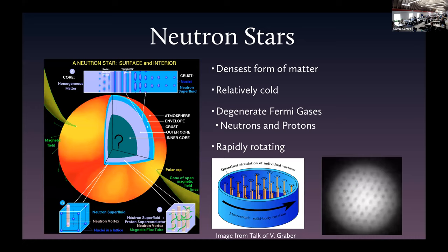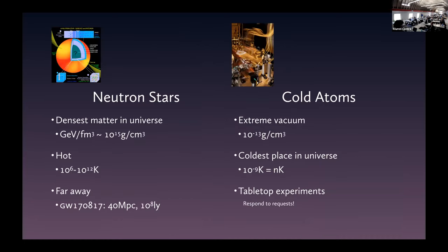These neutrons will form a superfluid. Neutron stars rotate, so that stirring happens naturally — you expect to form vortex lattices. Those vortices can have interesting dynamics, and some properties of a neutron star are associated with properties of those vortex lattices. The idea is to try and capture all of this through cold atom physics, because nuclear physics calculations are hard.